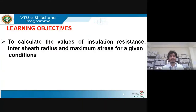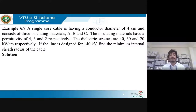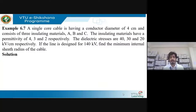So let's get started with the problem. A single core cable has a conductor diameter of 4 cm and consists of three insulating materials A, B, and C with permittivity values of 4, 3, and 2. The dielectric stresses are 40, 30, and 20 kV/cm. If the line is designed for 140 kV, find the minimum internal sheath radius. Let us note down the known values and formulas.